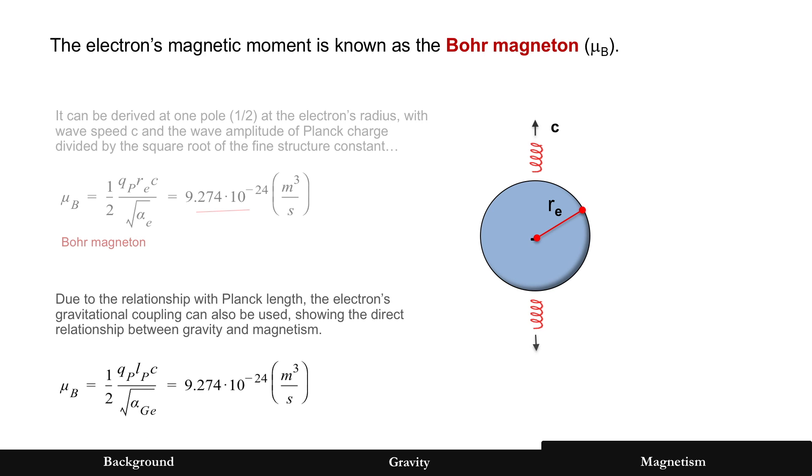Now, because of the Planck length relationship, the electron's gravitational coupling constant, see that flashing arrow there? It can also be used. You take the Planck charge and the Planck length and the speed of light, divide that by the square root of the electron's gravitational coupling constant. What do you get? You get the Bohr magneton. So, that's one of the first equations now that directly relates gravity and magnetism.